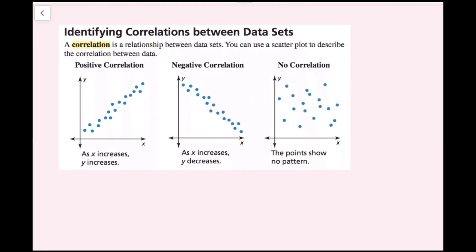What we just looked at in Example 1C is called correlation. A correlation is a relationship between data sets. You can use a scatter plot to describe the correlation between data. Positive correlation is when x and y are both increasing at the same time. As x increases, y increases. That is a positive correlation.